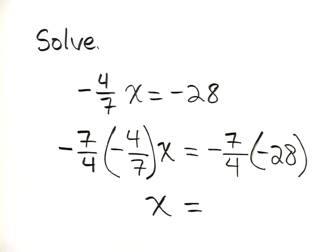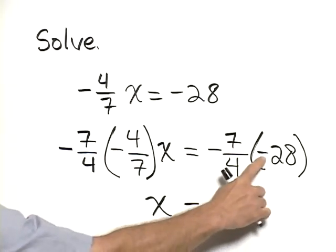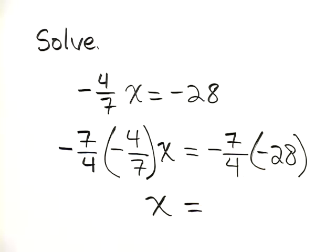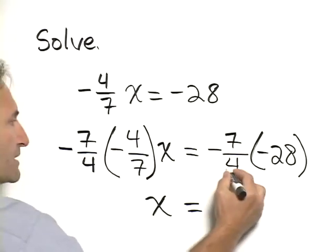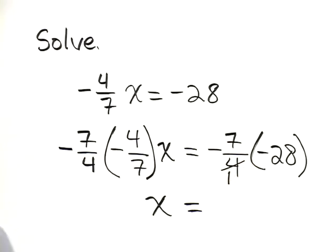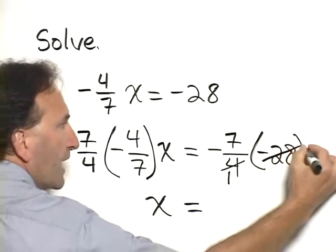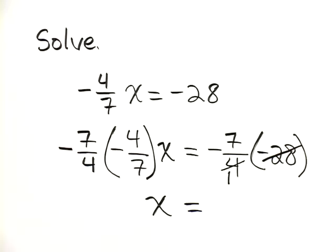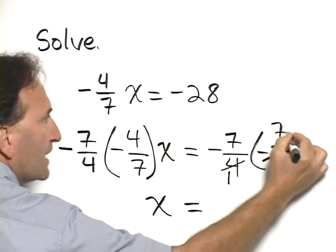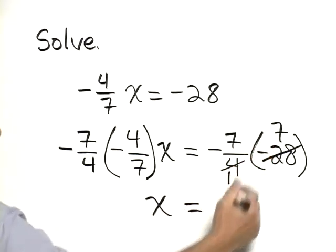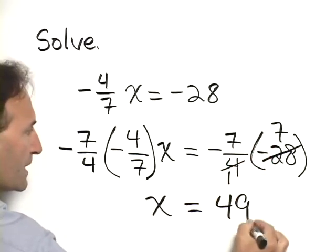On the right hand side, we're multiplying a negative number times a negative number, which is positive. We'll also note that we can divide 4 by itself, and it goes in once, and we can divide 28 by 4, and it goes in 7 times. So what we have is 7 times 7, which is 49.